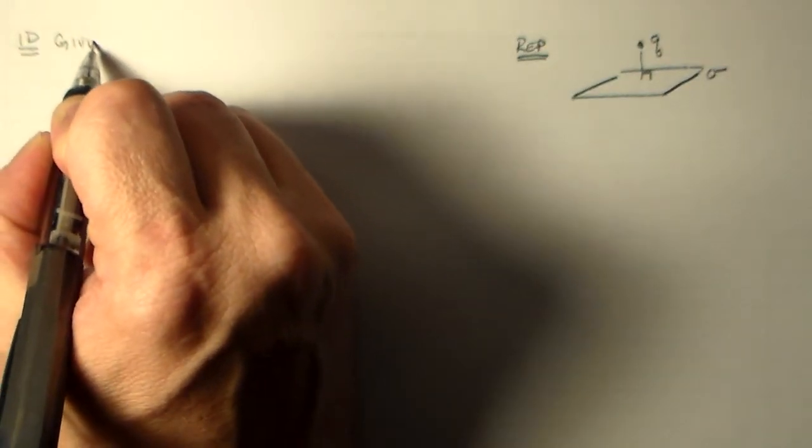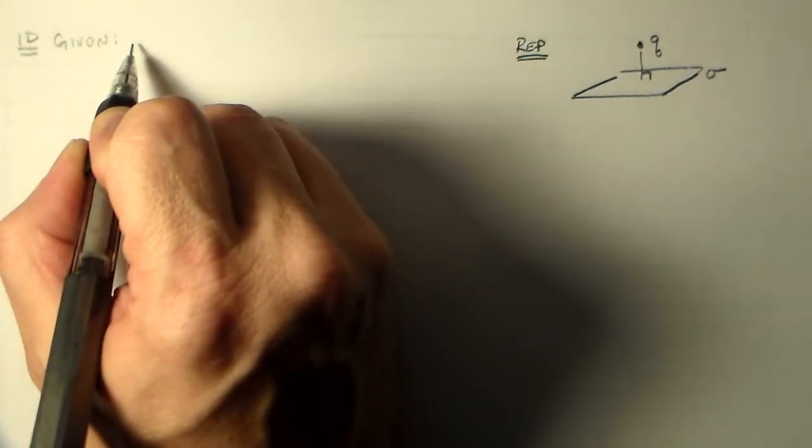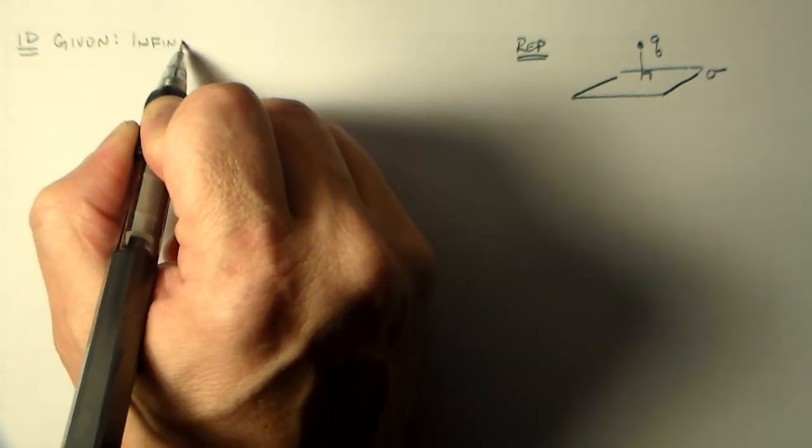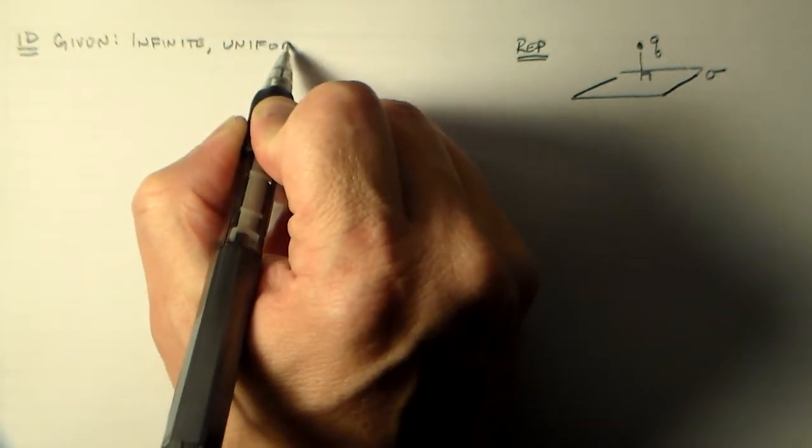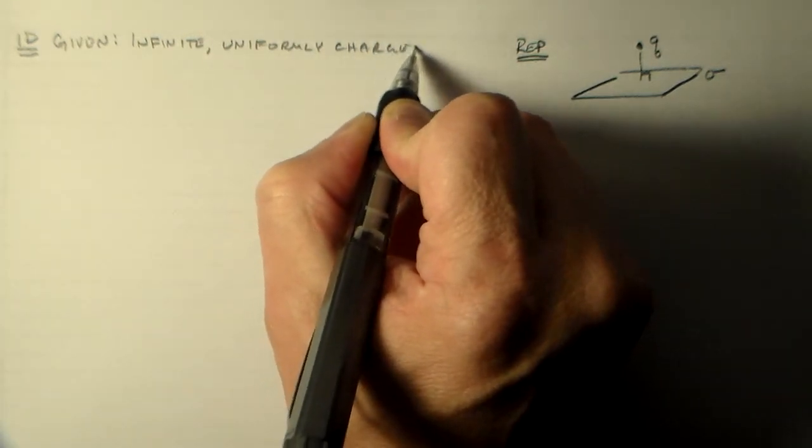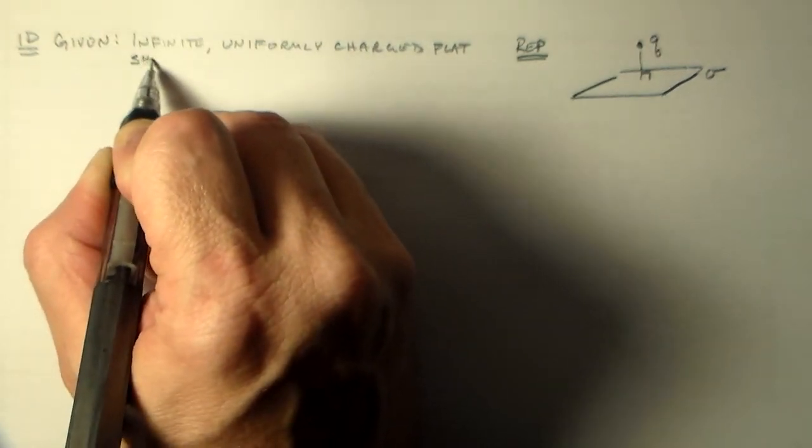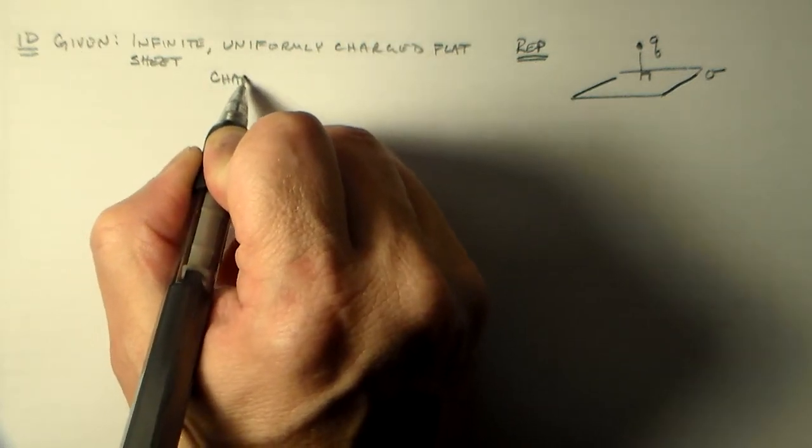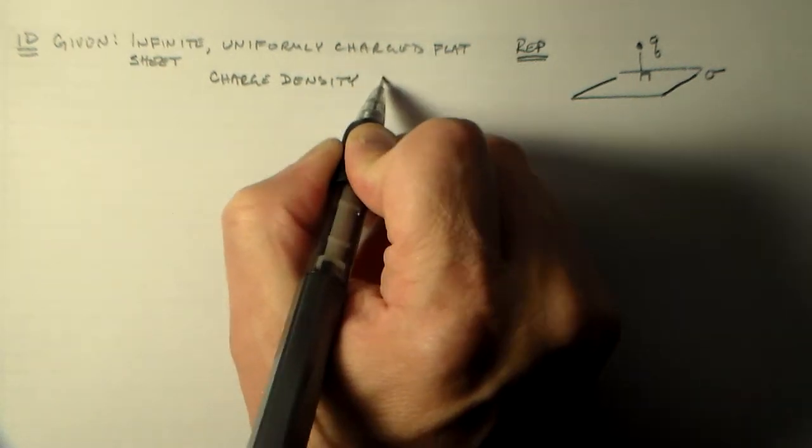So let's just figure out exactly what we're given. What do we need to look at? What do we have to work with? Well, we have this infinite uniformly charged plane, or infinite uniformly charged flat sheet. We'll give that a charge density, sigma.